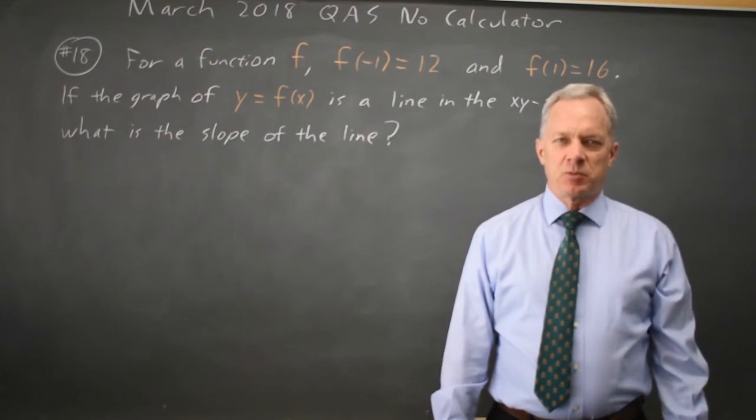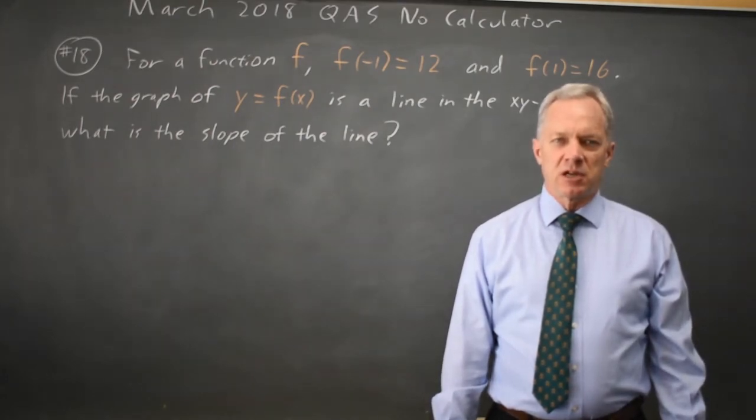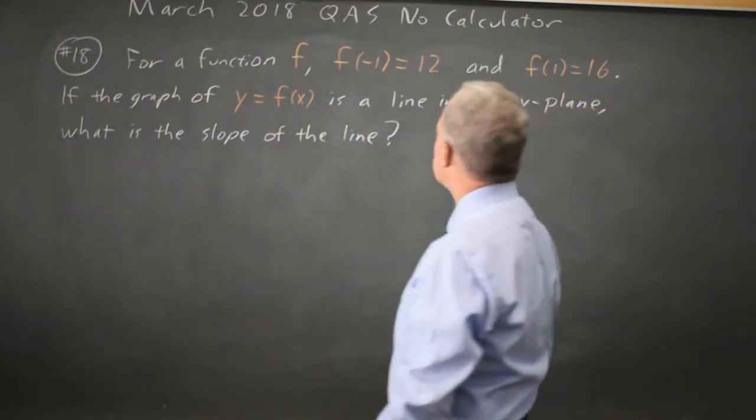This is question 18. College Board gives us the coordinates of two points on a line and asks for the slope of the line. So let's take a look at this.